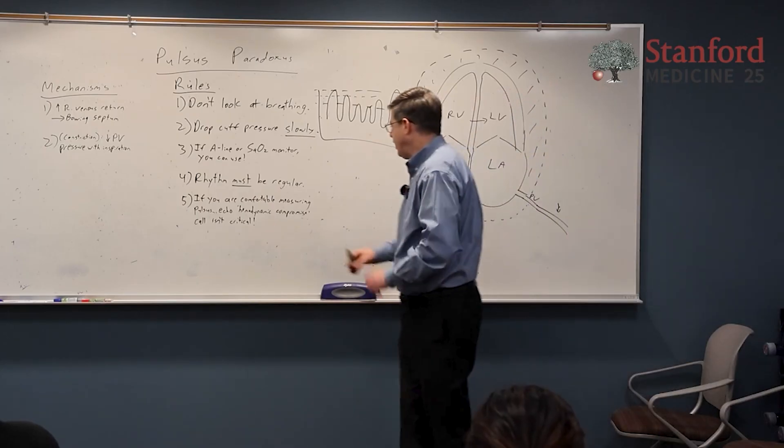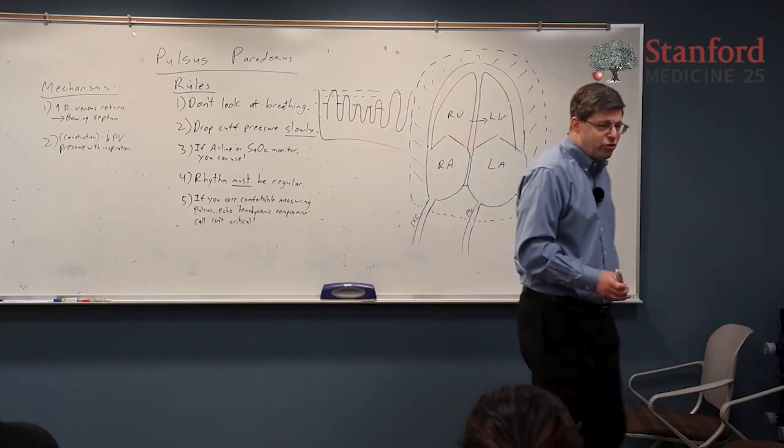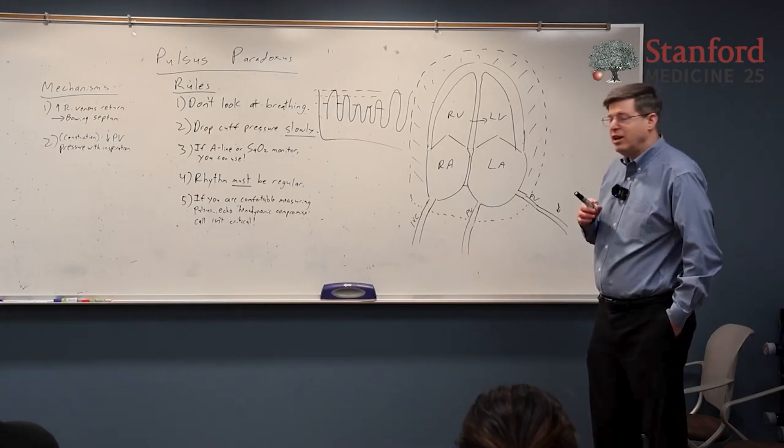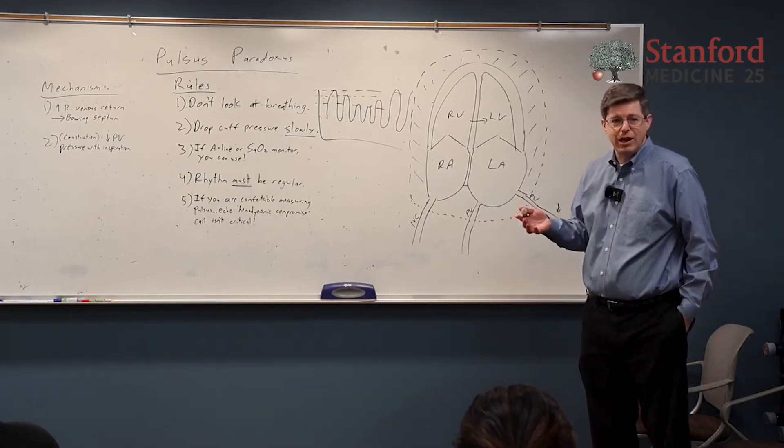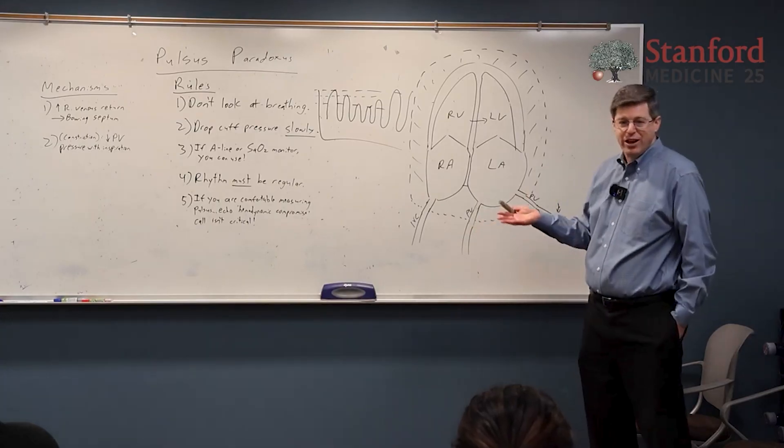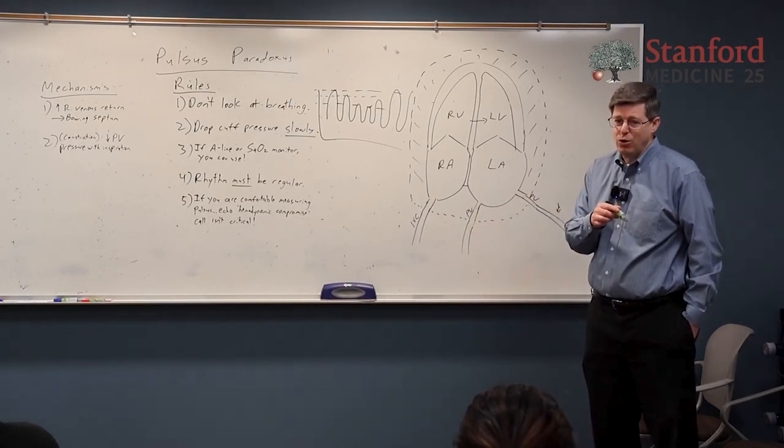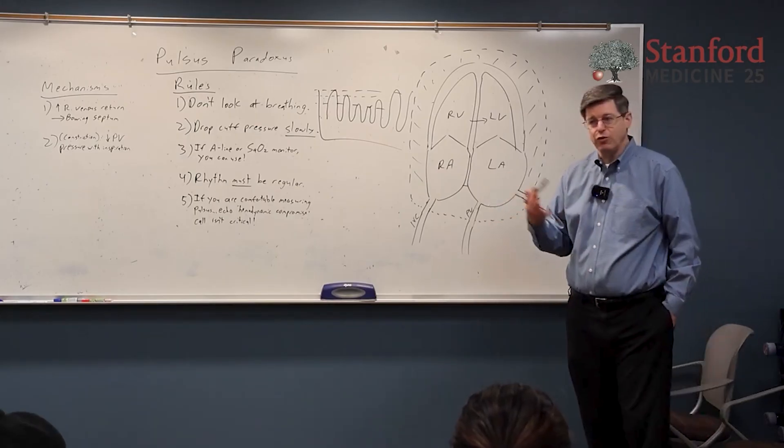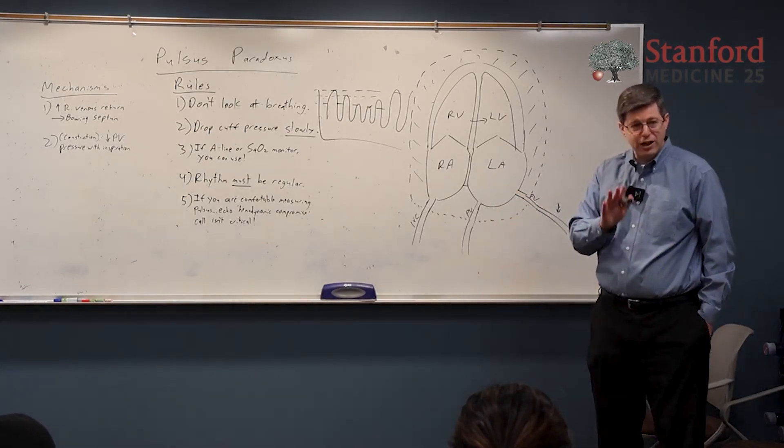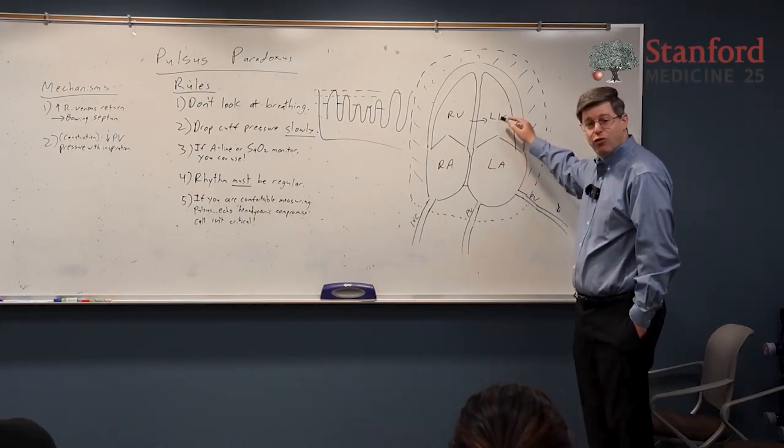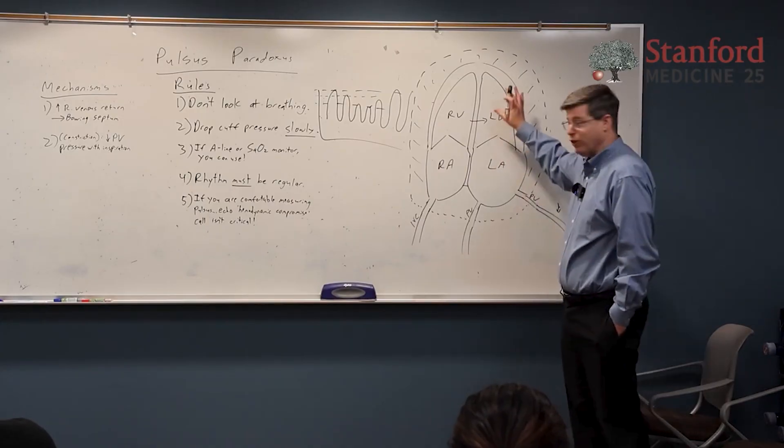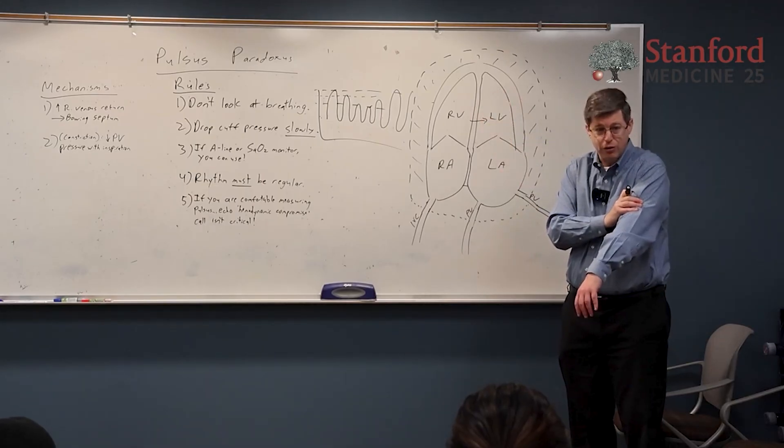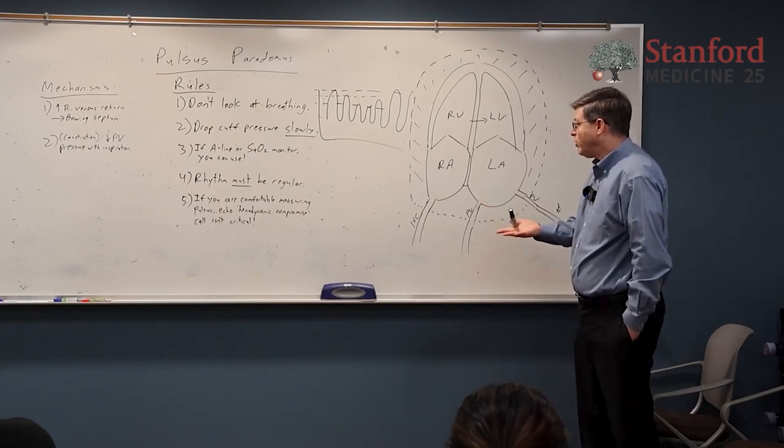And then number five, if you are comfortable measuring a pulsus, which hopefully everybody will be as we finish this session, then you don't need to order that echo to say is there a hemodynamic effect or hemodynamic compromise. It's actually not that important because what they're looking at by echo is basically what you're measuring with pulsus. And in fact, one of the things that they look at when you're looking for hemodynamic effect is directly trying to look at the velocity of blood across the mitral valve as a surrogate for filling the left ventricle and stroke volume. Well that's exactly what you're measuring the effect of when you're measuring a pulsus.